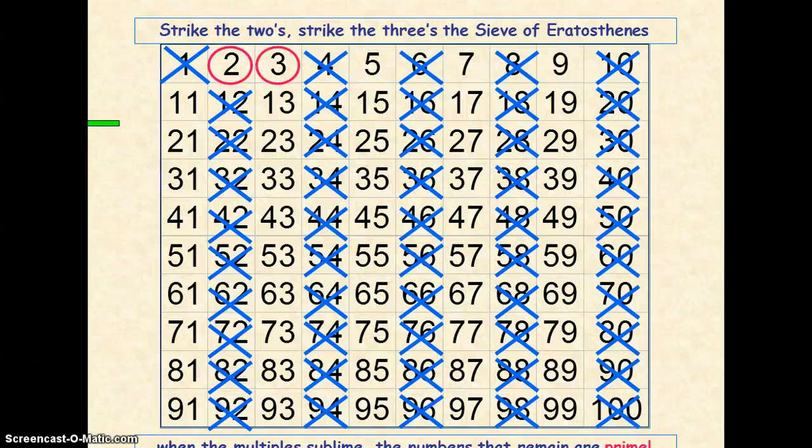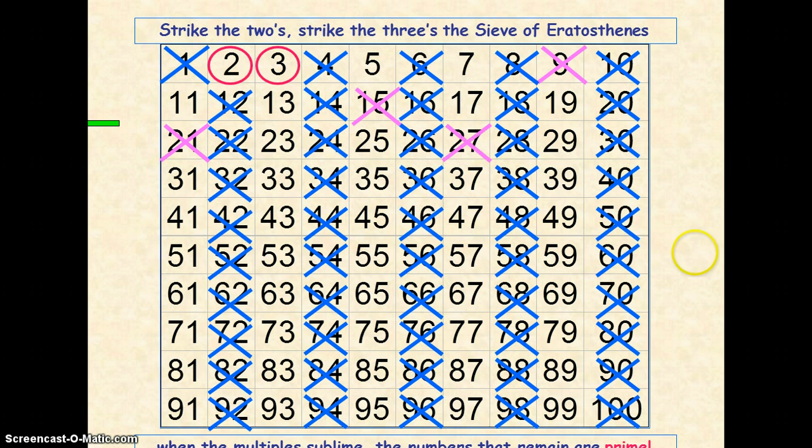But if the number 3 is prime, then any other number in the 3 times table will not be prime because it must have at least three factors: 1, itself, and 3. So if we just go up in our 3 times table, so 3, 6 has already crossed off, 9 we can cross off, 12, 15 we can cross off, 18, 21. And we can keep going up in our 3 times table, crossing off anything in the 3 times table.